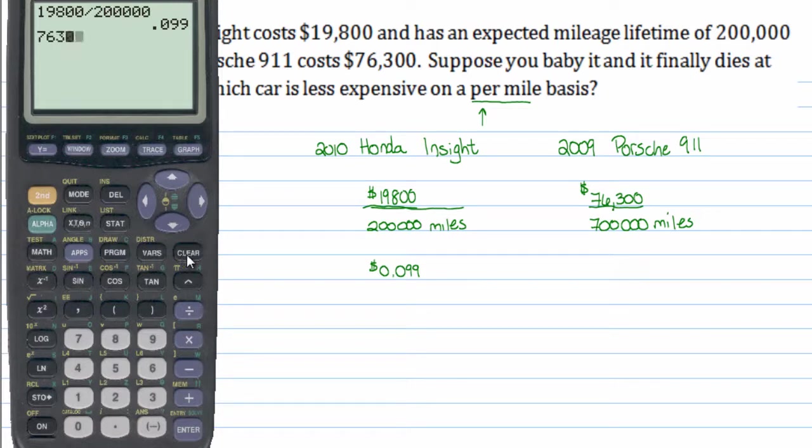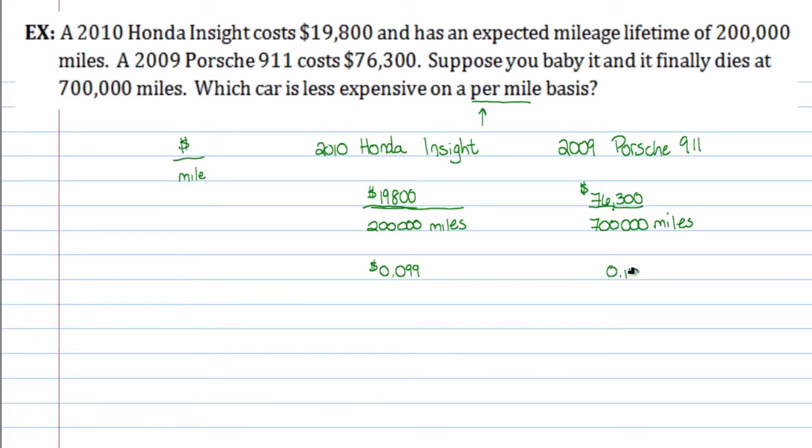The Porsche is $76,300, and that's for 700,000 miles. The Porsche is about $0.11 a mile, $0.109. So this is the cost in dollars for the Porsche.